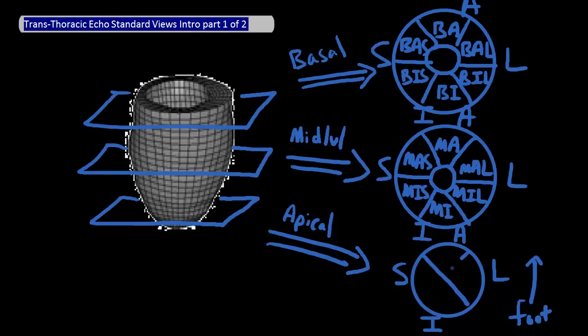For the apical cut, the apical anterior part is here, the apical inferior part is here, the apical septal part is here, and the apical lateral part is here.